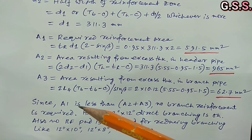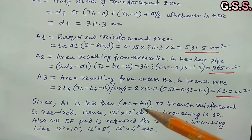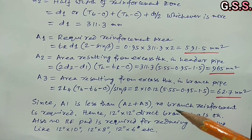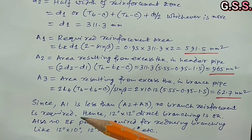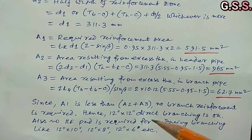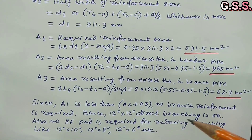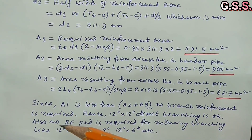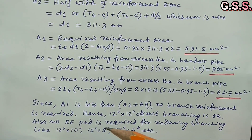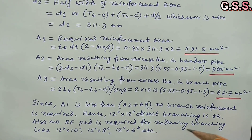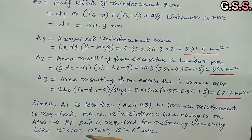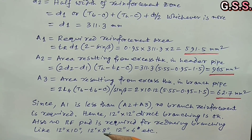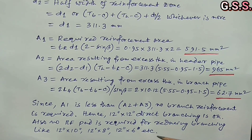Since A1 is less than A2 + A3, no branch reinforcement is required. Hence, 12-inch by 12-inch direct branching is okay. Also, no RF pad is required for reducing branching like 12-inch by 10-inch, 12-inch by 8-inch, 12-inch by 6-inch, etc.